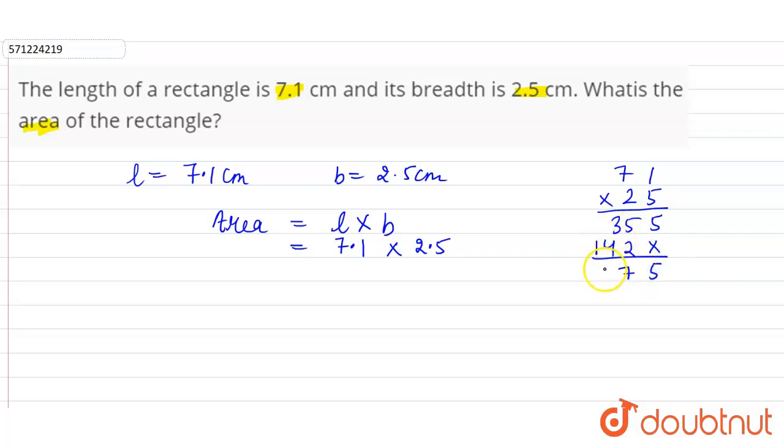Now we have to place the decimal two digits before the answer, two places from left, one and two. So 17.75 centimeter square is the correct answer for the given question.